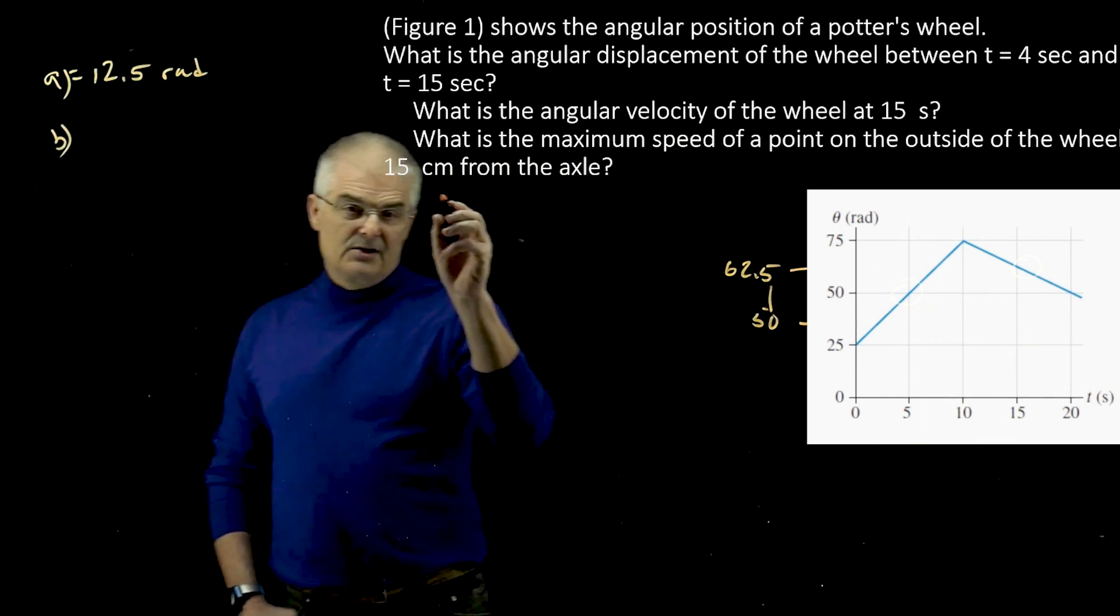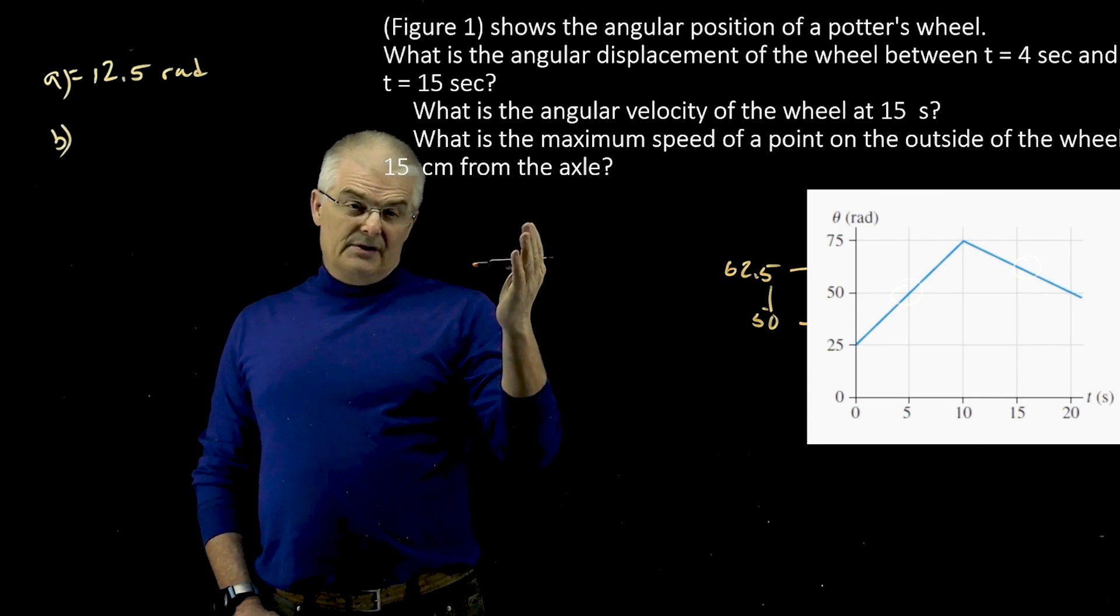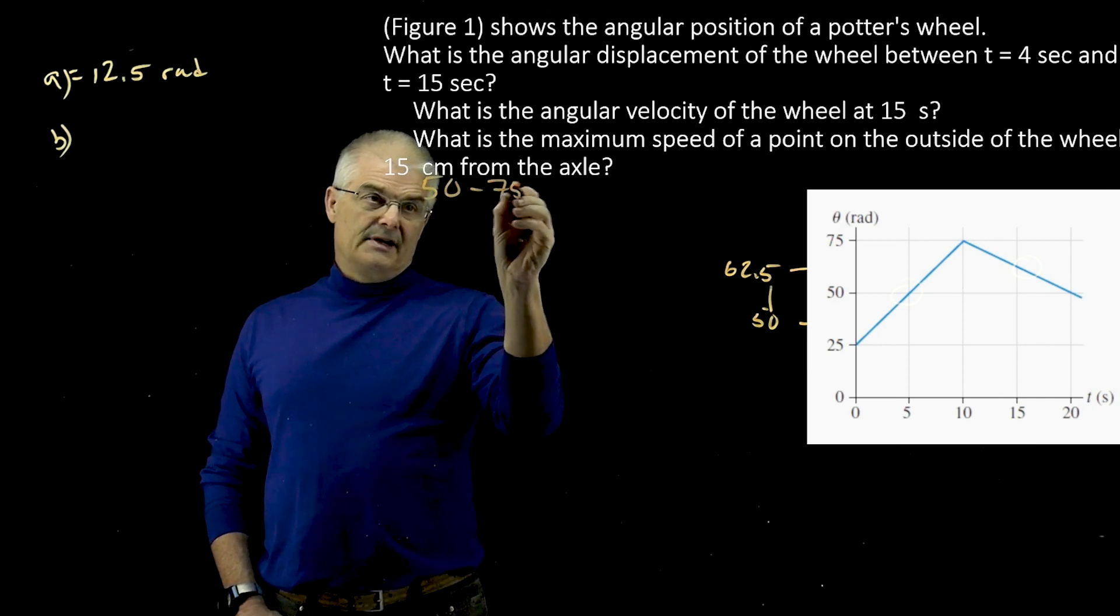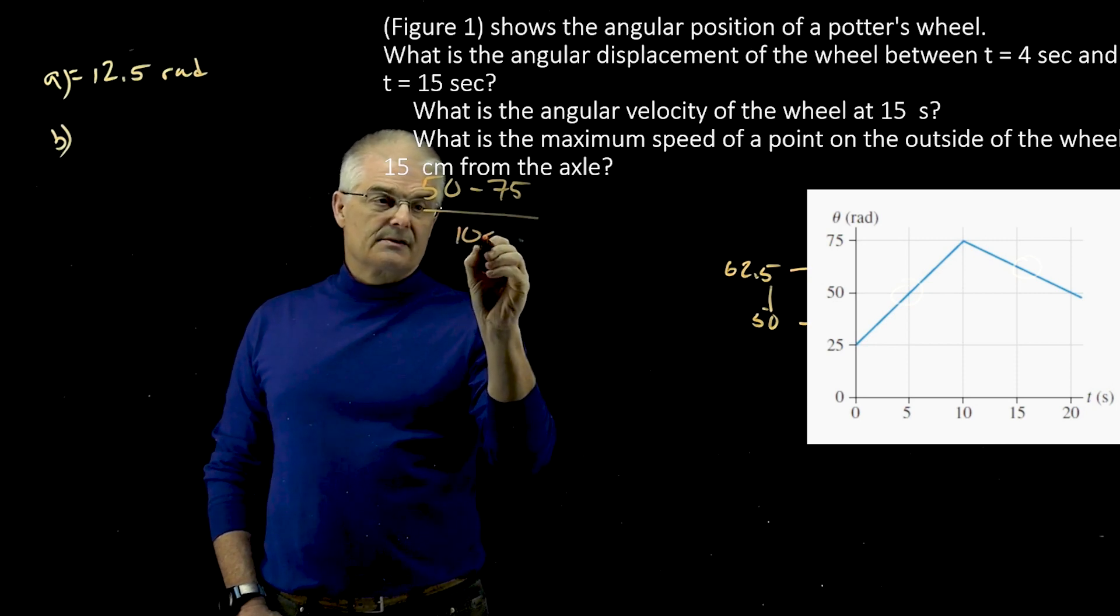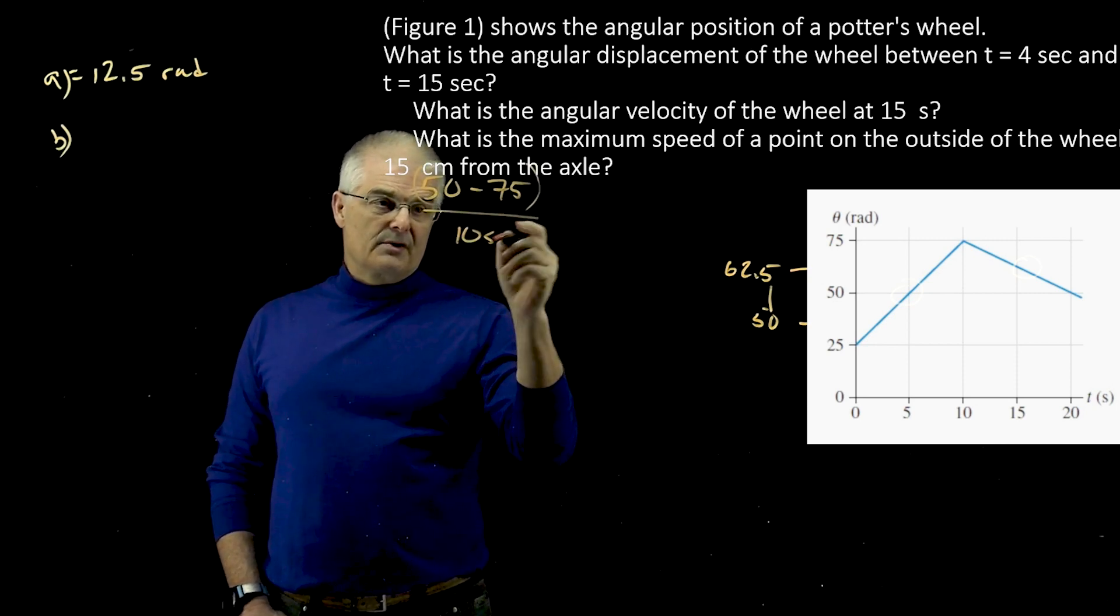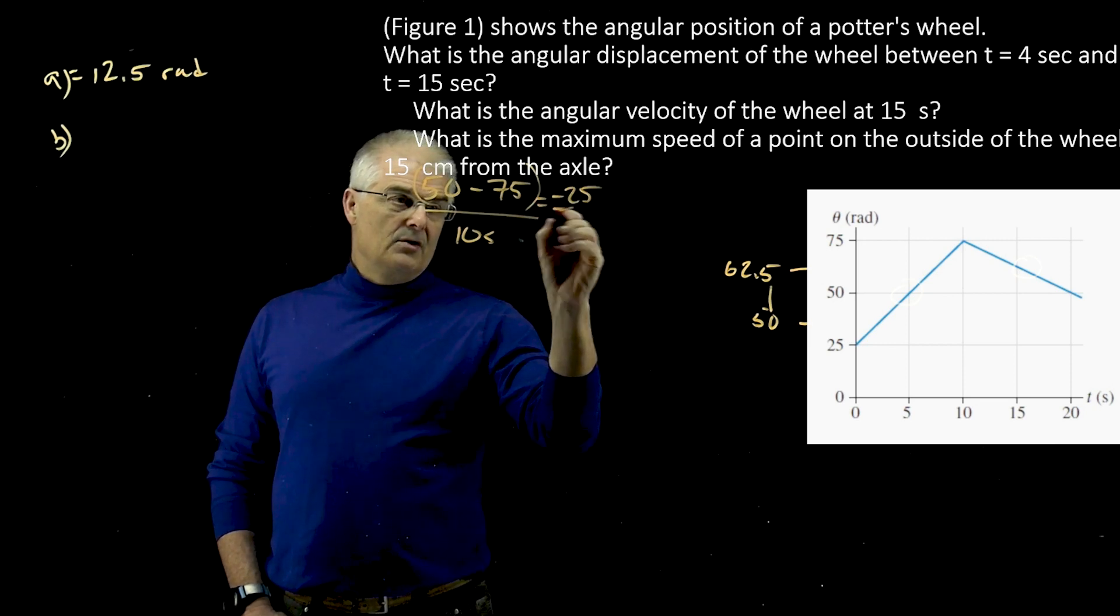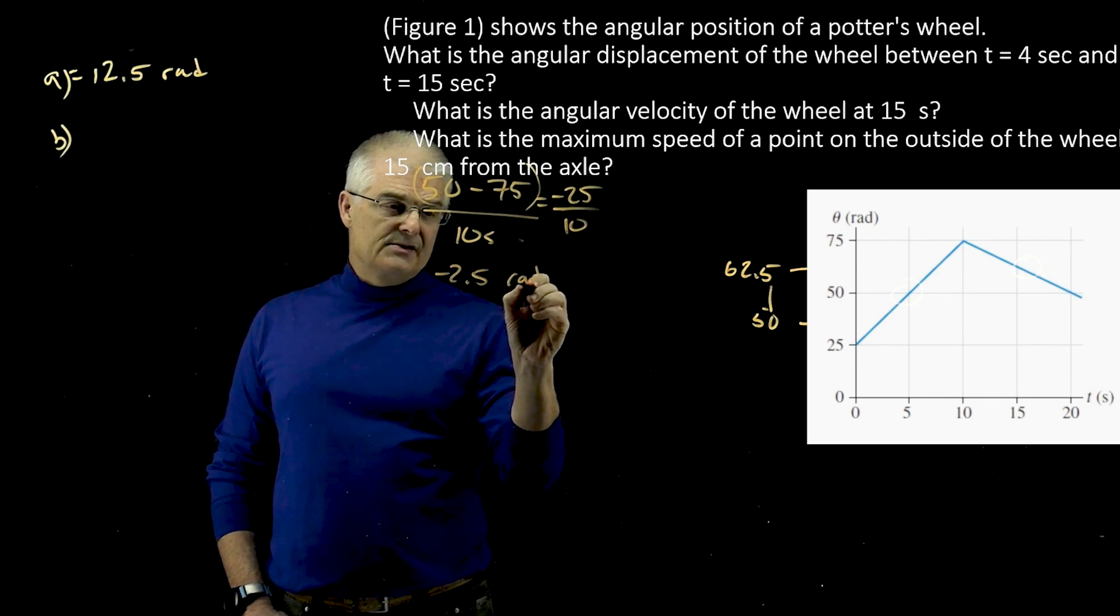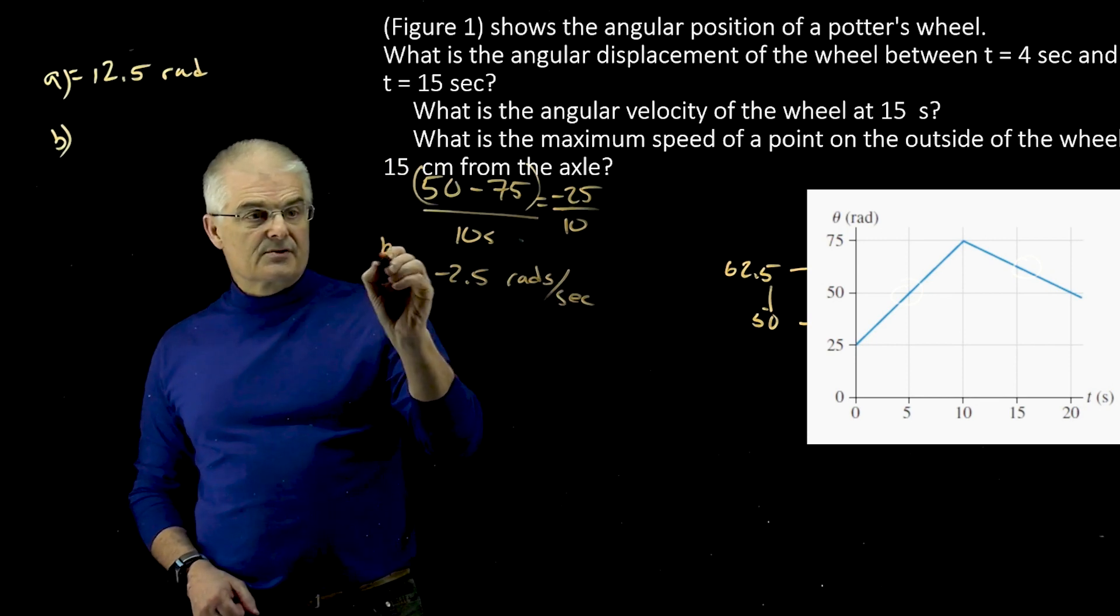Slope of this, which will be a negative slope. And so if you look at it, you're going to go from, it's rise over run, so it's going from 50 minus 75, divided by 20 minus 10, 10 seconds. So 50 minus 75 is negative 25 over 10, so it's negative 2.5, and that would be rads per second. So this is the answer to B.